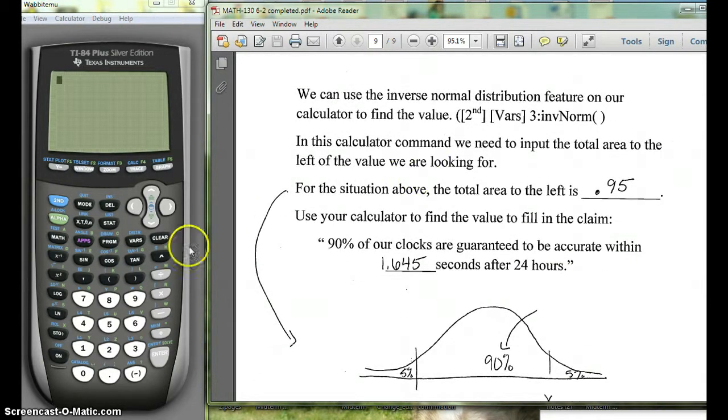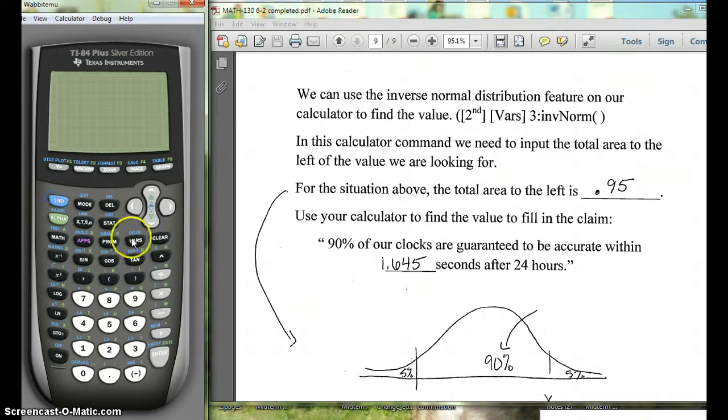So to get to the normal distribution, you're going to hit 2nd, VARS, and this inverse normal, INV norm, is number 3. Now the area to the left is 0.95. This is the standard normal, so our mean is 0 and our standard deviation is 1. Then we'll hit paste.